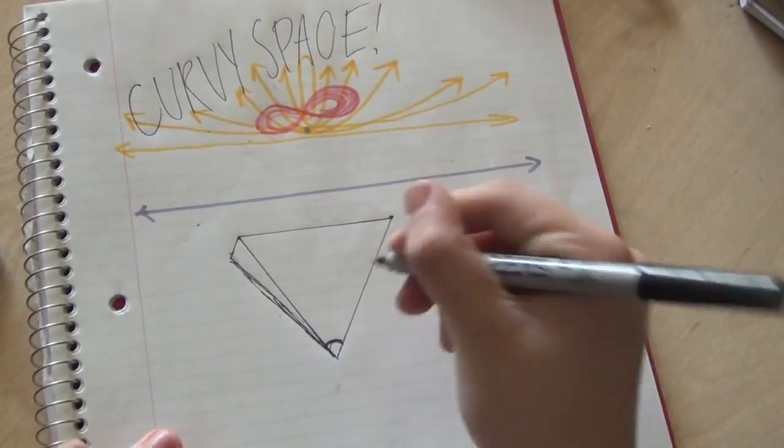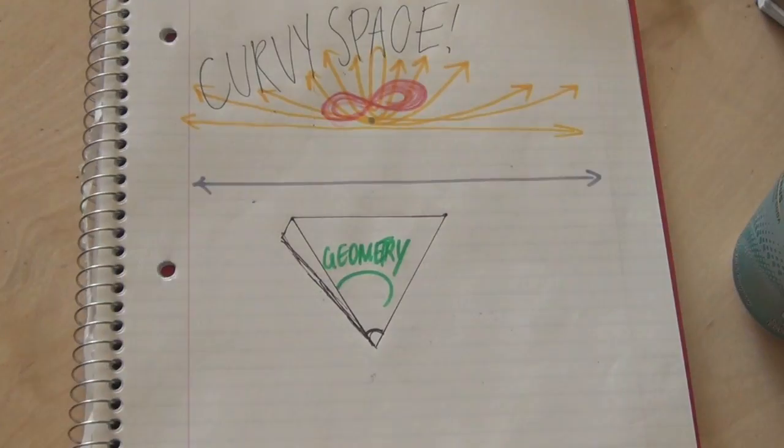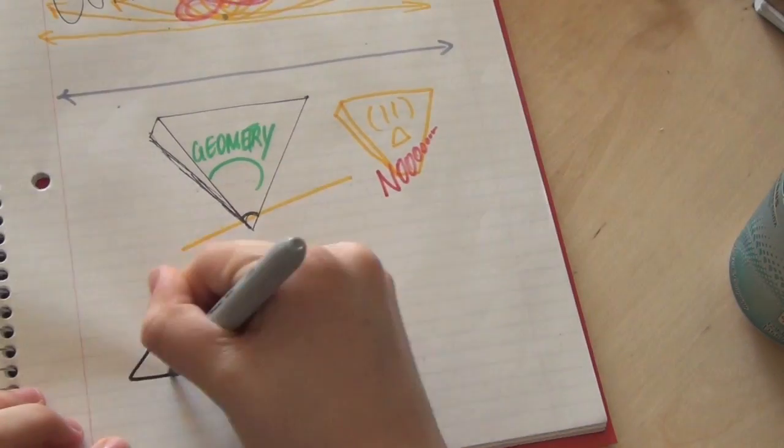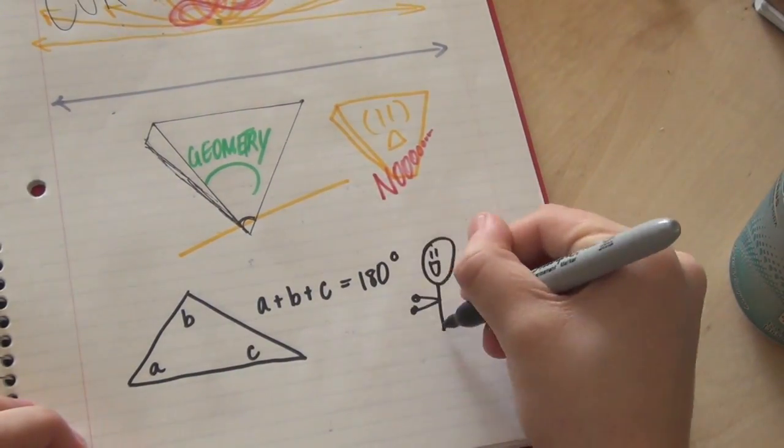You see, Euclidean geometry is like an inverted pyramid, and if you take away the tip, the pyramid just crashes down onto itself. If there's no parallel postulate, then there's no Euclidean geometry, and then what? Can triangles' angles add up to more than 180?